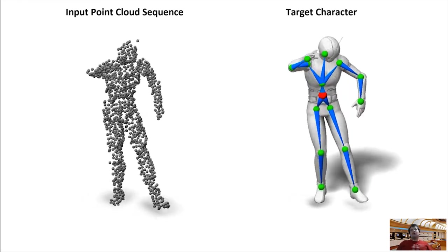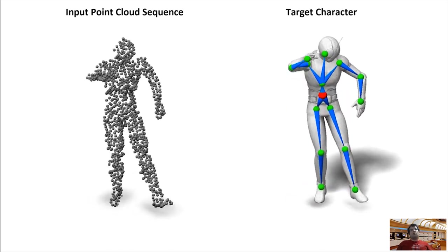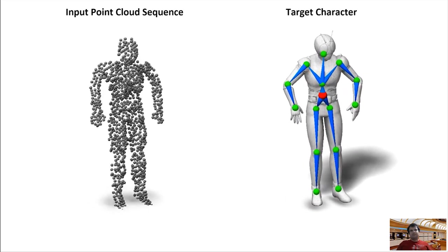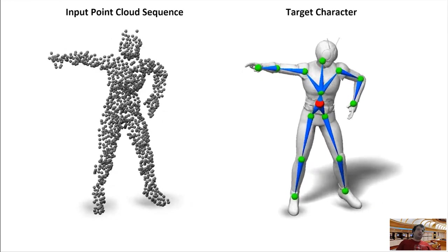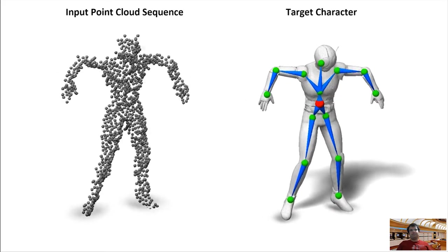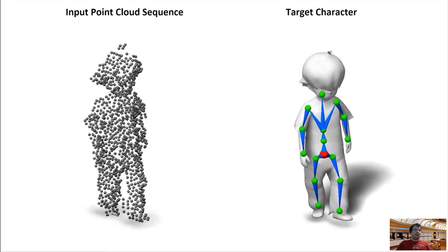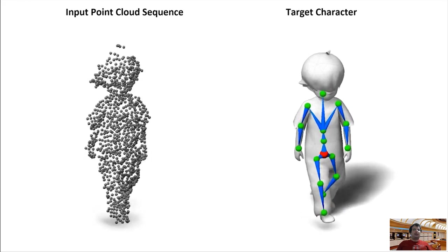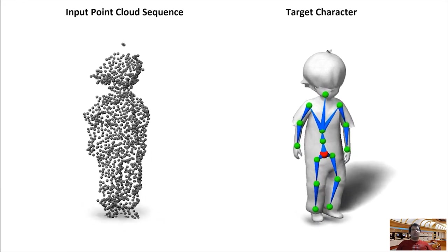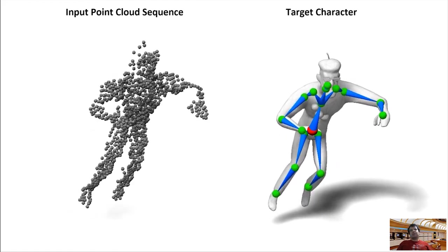Here we rig and animate the 3D character of this alien from a humanoid point cloud sequence. This is a different motion transfer using the same 3D target character and rig. This is another motion transfer example for a child point cloud. And finally, here is a zombie motion transfer case.